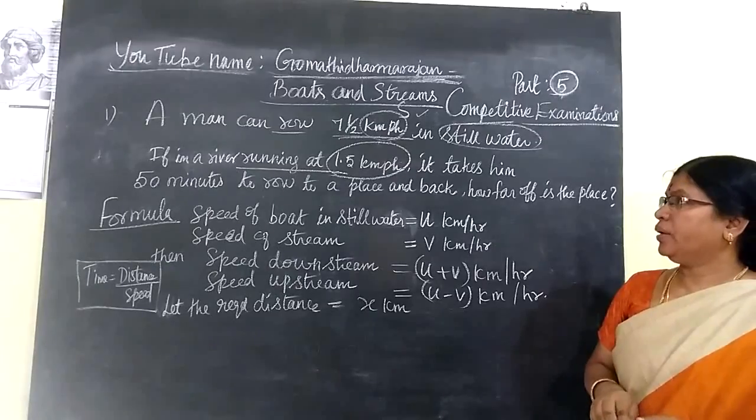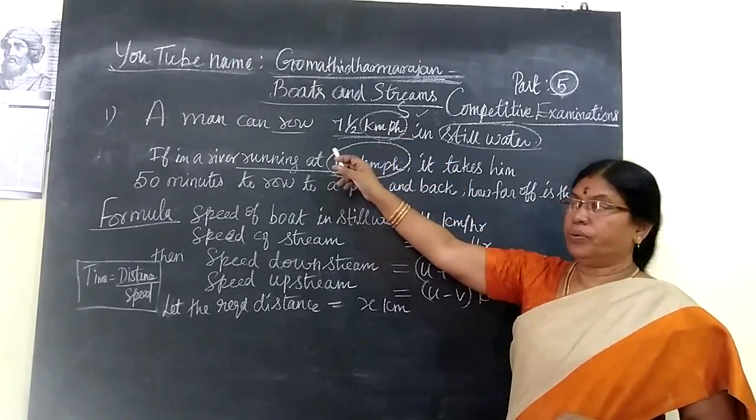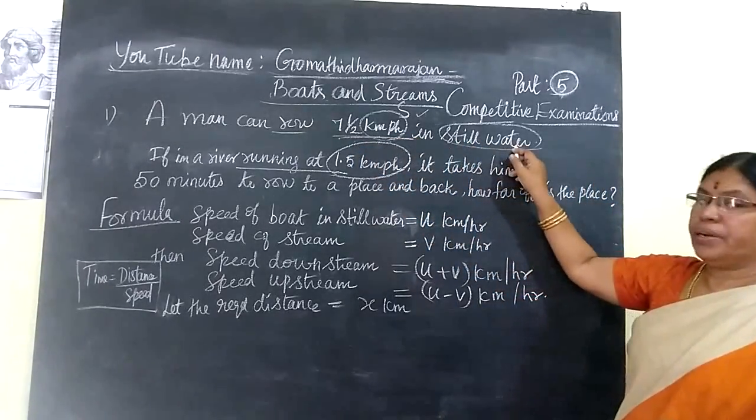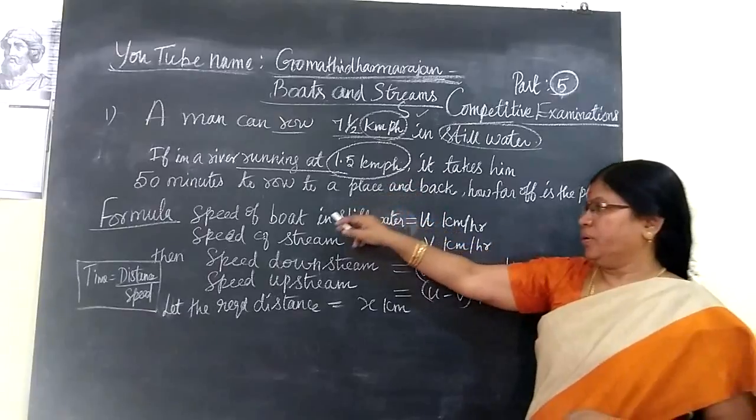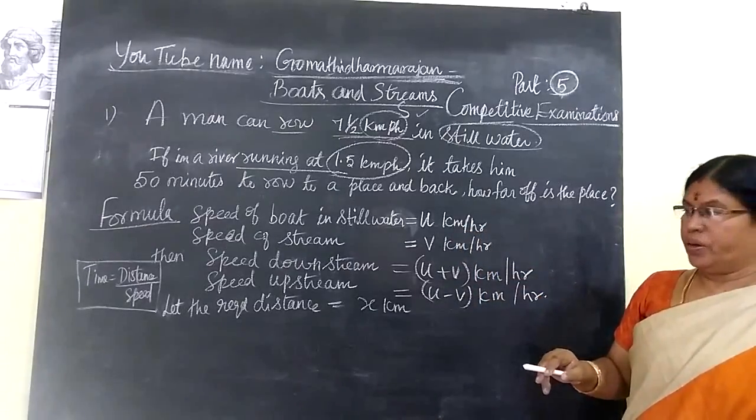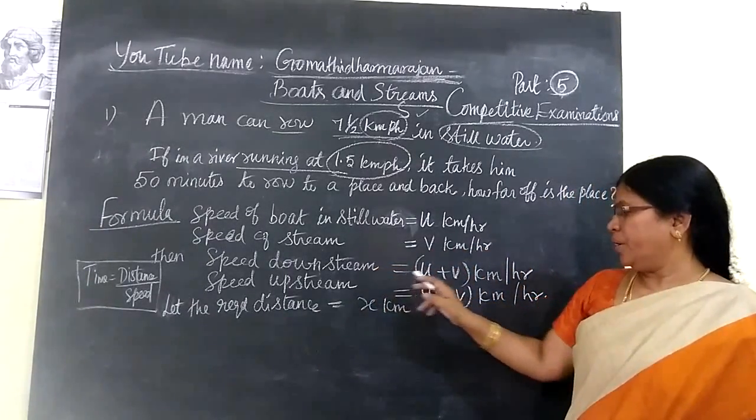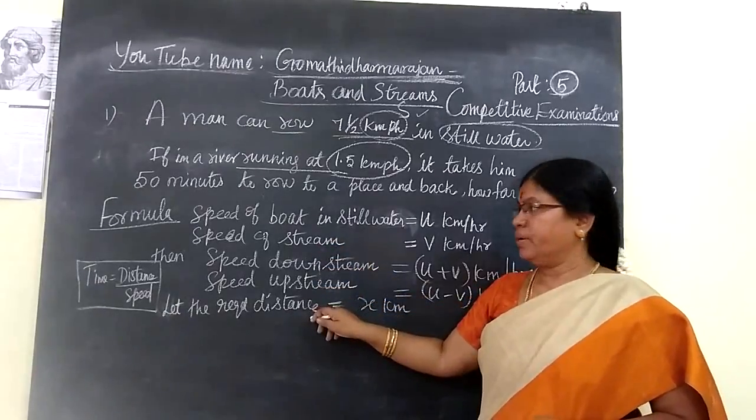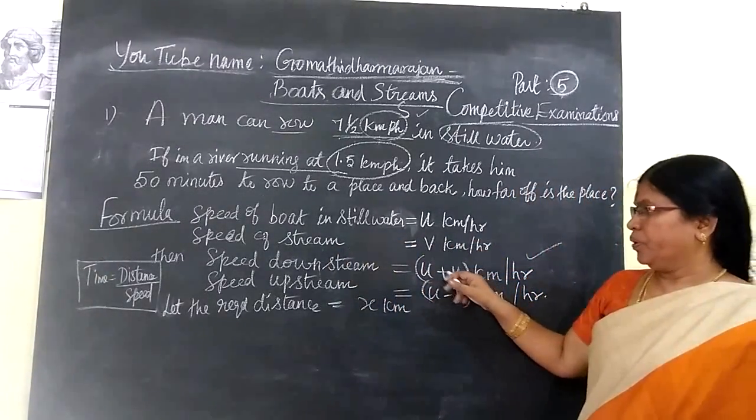See the problem: A man can row 7.5 km per hour. He reaches in still water in a river running at 1.5 km per hour. Given data: speed of boat in still water is 7.5 km per hour. Formula: speed downstream is U plus V, speed upstream is U minus V.